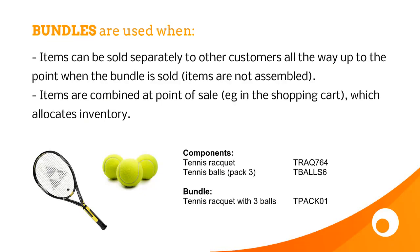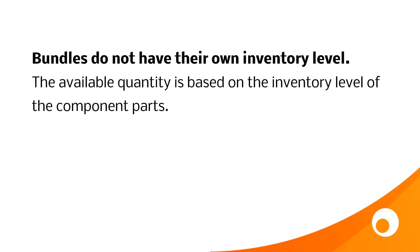First of all, let's take bundles. What we're doing here is actually just combining the products when the product is sold. The important thing is that other customers can buy the component parts all the way up until the point that the bundle is actually sold. When the bundle is sold, the inventory of the components is reserved. Bundles are not actually stock-tracked products — they don't have their own inventory level. The available quantity of a bundle is purely based on the inventory level of the component parts.